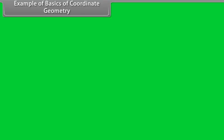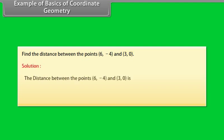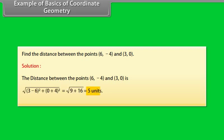Example — Basics of Coordinate Geometry: Find the distance between the points (6, −4) and (3, 0). Solution: The distance between the points (6, −4) and (3, 0) is 5 units.